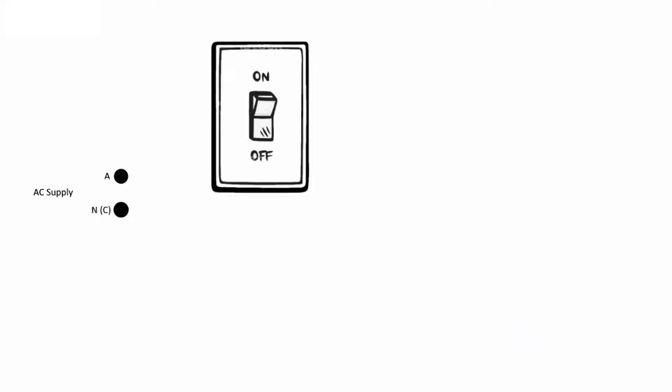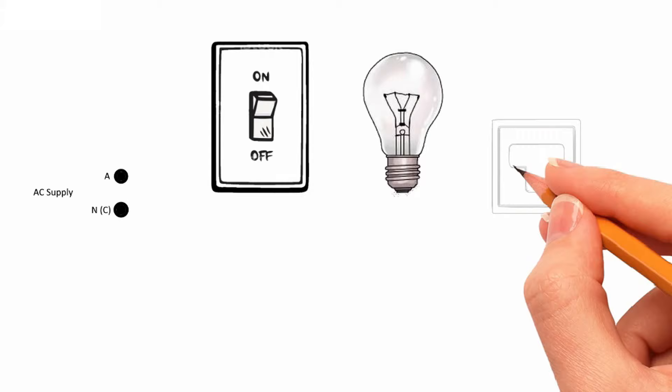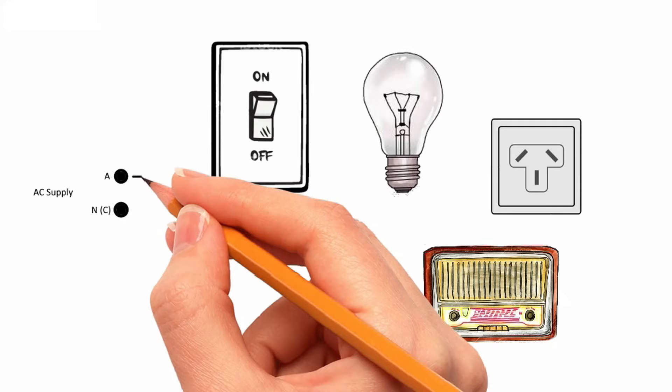Aussie outlets have a switch generally, same as Europe and the UK I think. As you can see in the diagram here, the power supply is on the left, then a switch and an incandescent light bulb. It must be incandescent, I can't use anything else and then a power outlet and of course our radio or item under test.